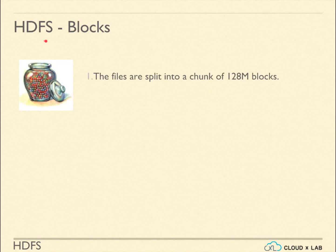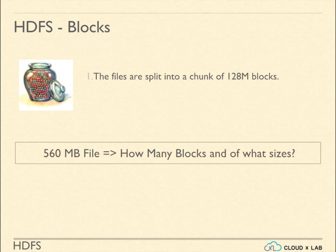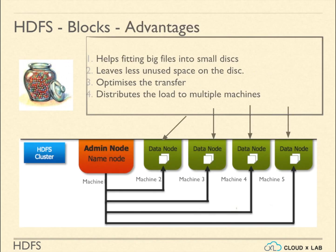Let us understand the concept of blocks in HDFS. When we store a file in HDFS, the file gets split into chunks of 128 MB. Except for the last block, all other blocks will have 128 MB in size. The last block may be less than or equal to 128 MB depending on the file size. The default block size is configurable. Let us say we want to store a 560 MB file in HDFS — this file will be split into 4 blocks each of 128 MB and 1 smaller block, meaning there will be 5 blocks in total.